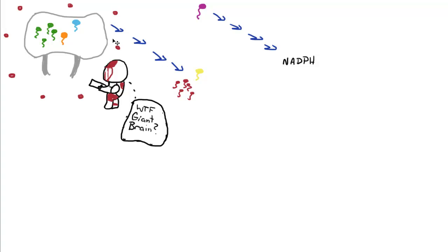And this is what's known as the Z scheme, because the electron starts at a relatively high energy. It's passed down to a lower state of energy, and then it's kicked up again to a higher state of energy, and ends up at NADPH.